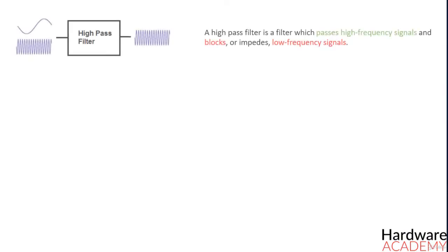A high-pass filter is a filter which passes high frequency signals and blocks or impedes low frequency signals. In other words, high frequency signals go through much easier and low frequency signals have a much harder time getting through, which is why it's a high-pass filter.